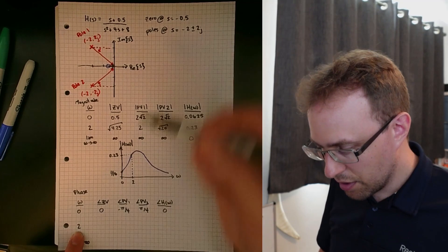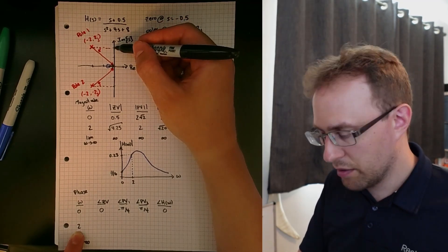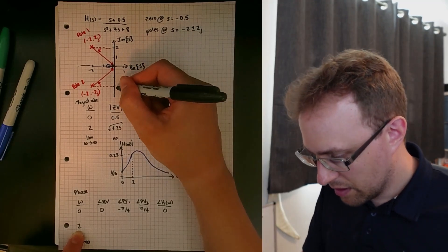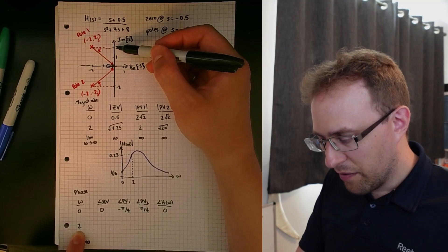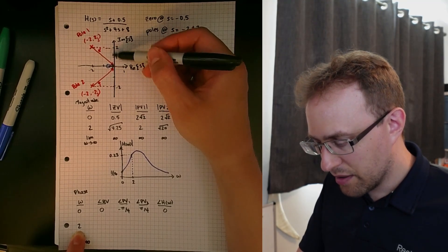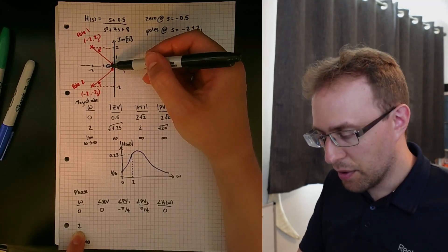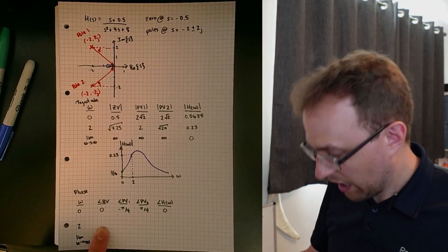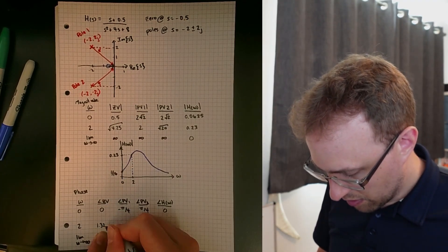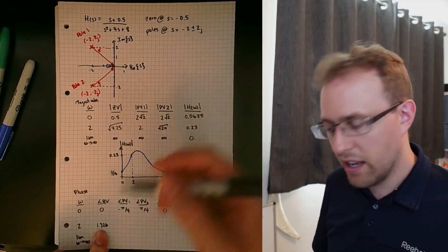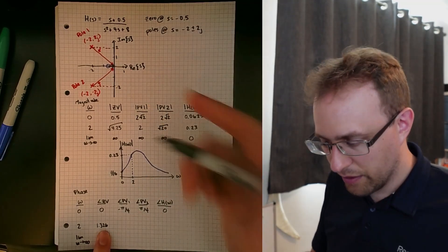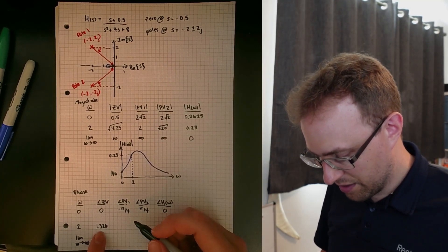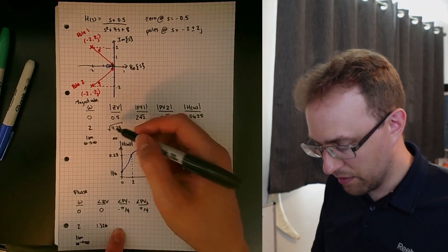For omega equal to 2, now we have all of our vectors pointing up here to omega equal to 2. Our zero vector will have a positive value that's between zero and pi over 2. If you were to apply, say, a tangent, you could work out that the angle associated with the zero vector in radian form is going to be 1.326. You could find this as the arctan of 2 divided by 0.5. You could take the magnitude that we calculated here and apply a sine or cosine relationship, but we can measure this phase in radians using the arctan.